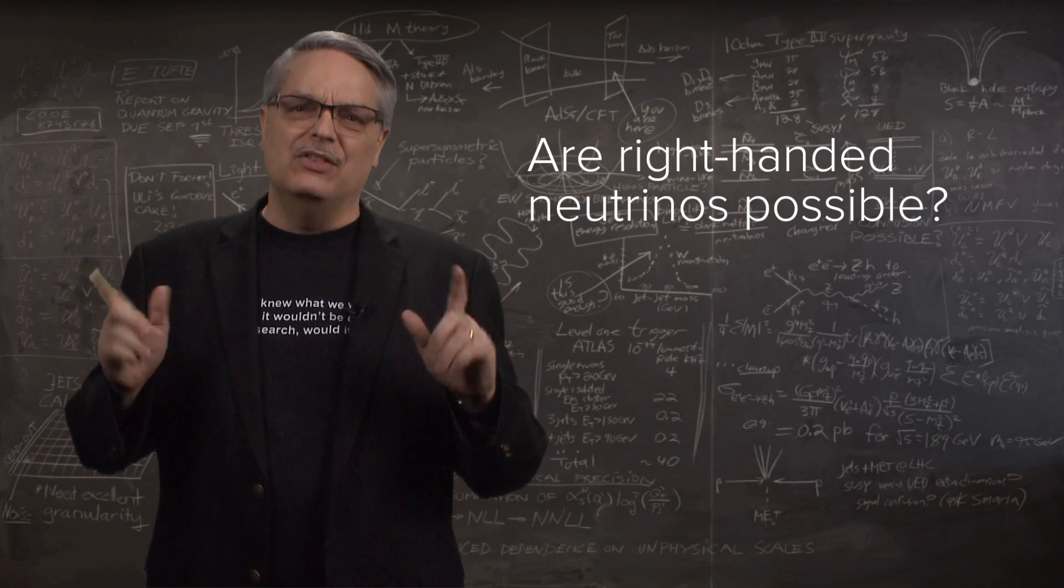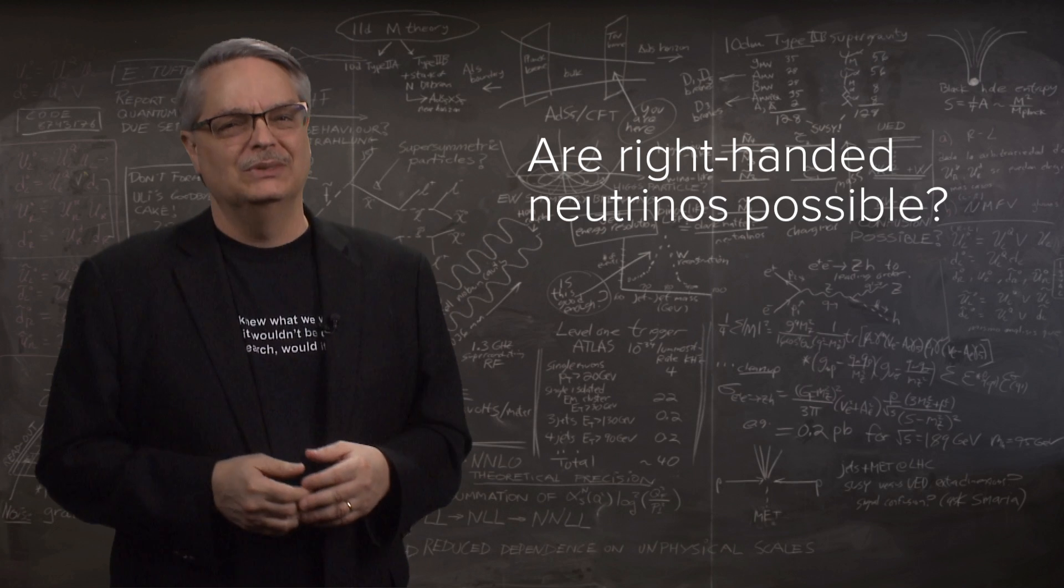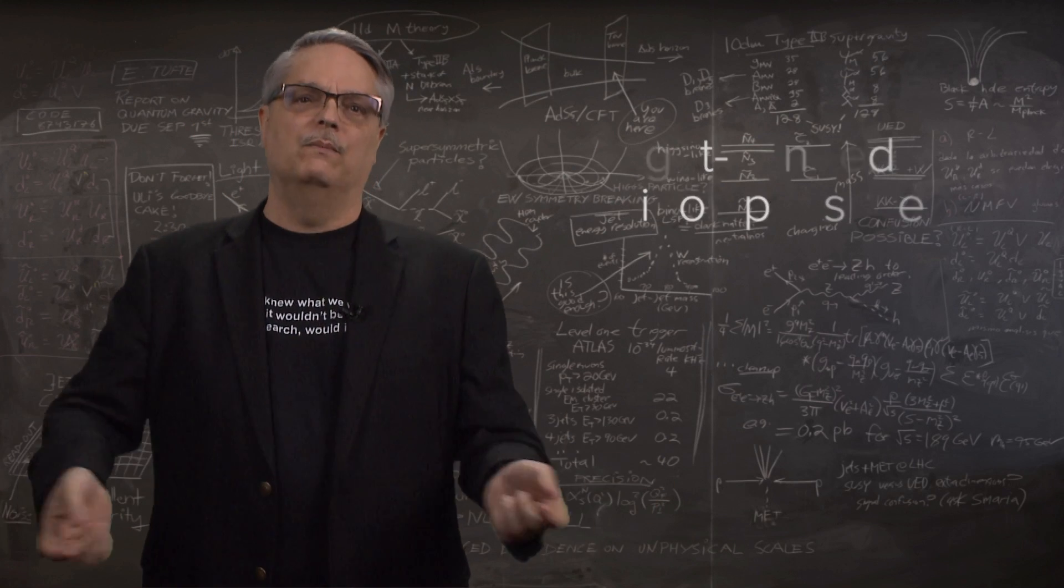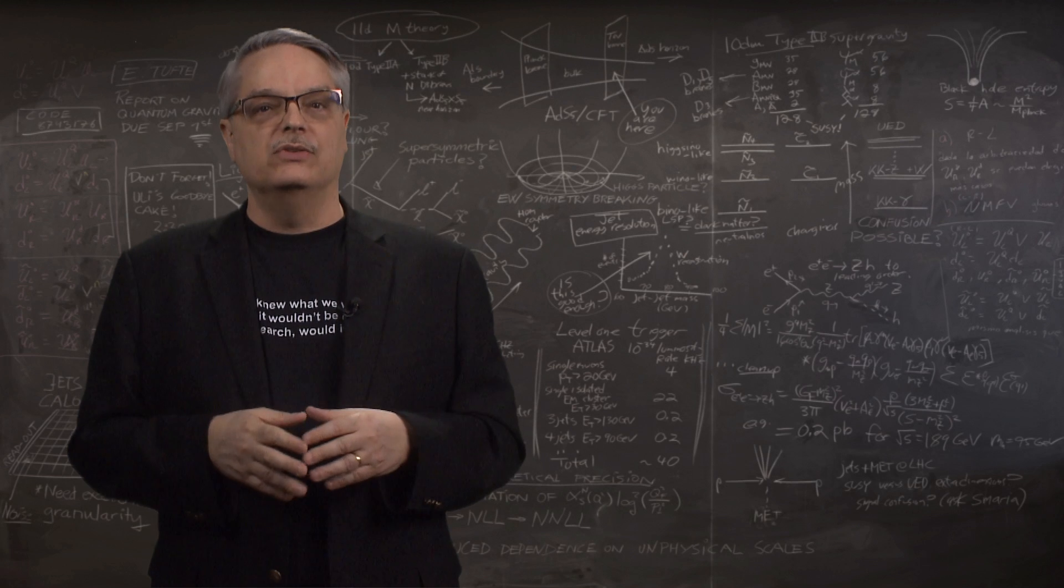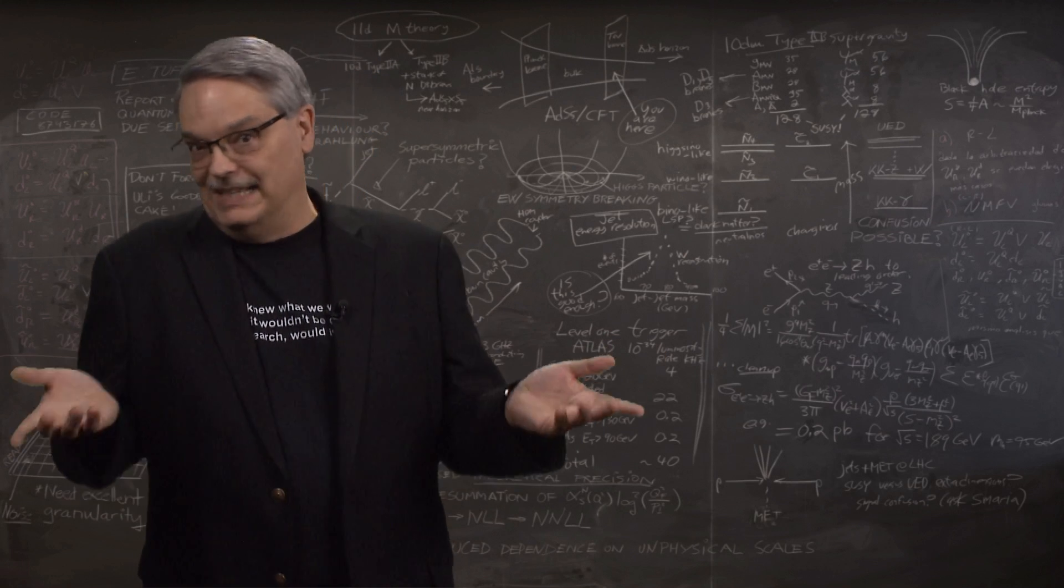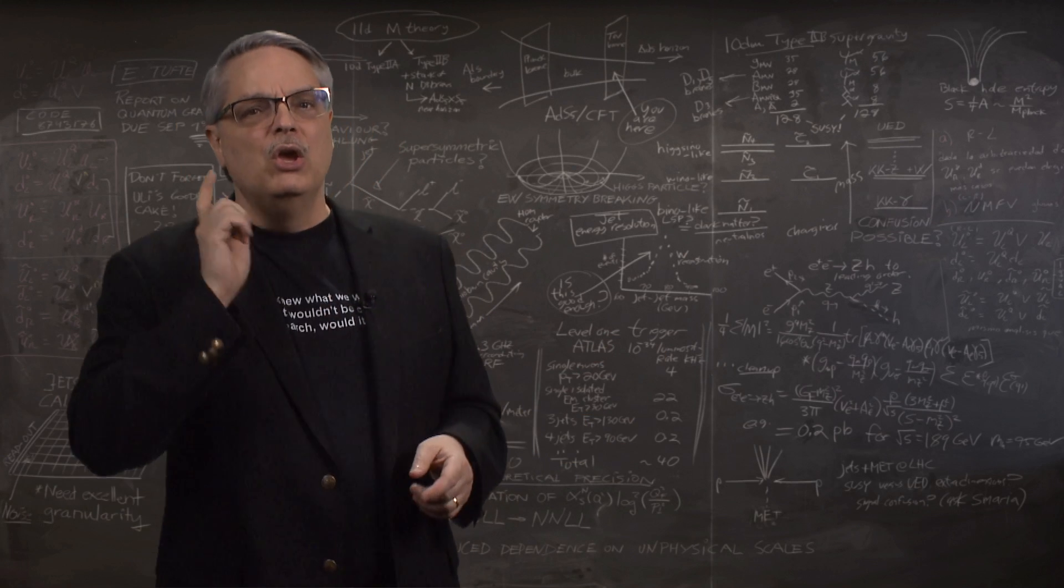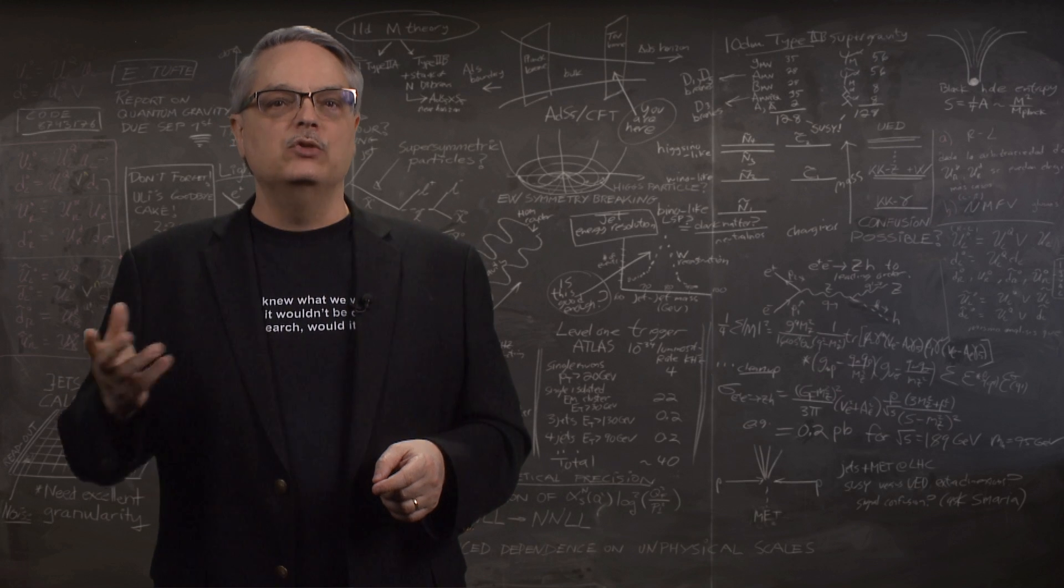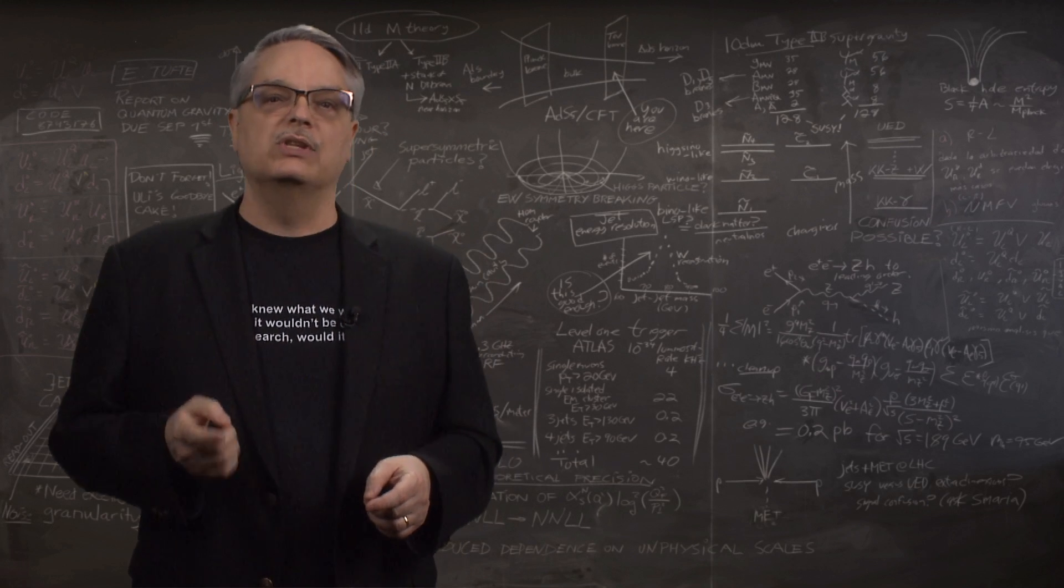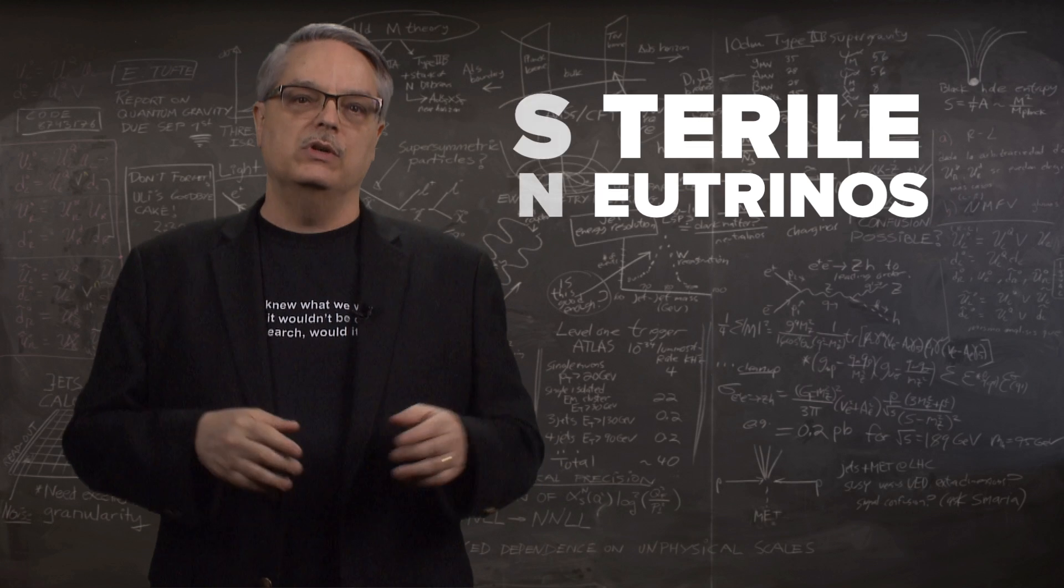Does that mean that there are no right-handed neutrinos? Well, strictly speaking, no. We could imagine that there are right-handed neutrinos that just don't feel the weak force. That is possible. We have a name for these hypothetical neutrinos that don't interact with a weak force. They are called sterile neutrinos.